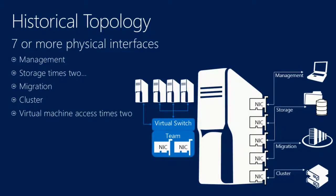If we look at our historical topology for Hyper-V, we used to recommend discrete network adapters for each and every type of workload. That meant a physical NIC for management — often teamed — a physical NIC for storage if you were using iSCSI, maybe two or three or four of them, a physical NIC for migration traffic, a physical NIC for cluster traffic, and then some physical NICs teamed for virtual machines.